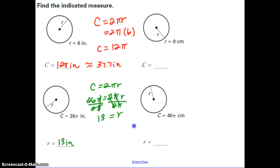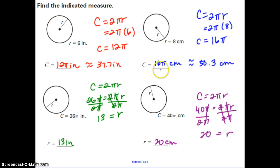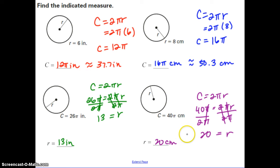Now I want you to pause and try the next two examples, then check back with me. Hopefully you found the first answer was 16π cm or approximately 50.3 cm, and the second example was 20 cm. If that's not what you got, pause and check your work to see where you might have made a mistake.